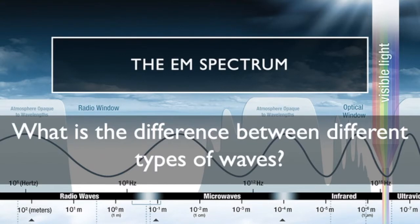Hi everyone, it's Mr. Baker here with another physics video. Today we're going to be looking at the electromagnetic spectrum. So today we're going to be answering this question: what is the difference between different types of waves?